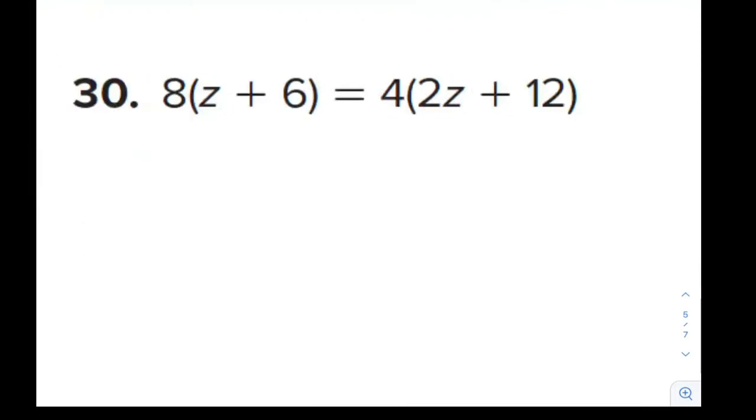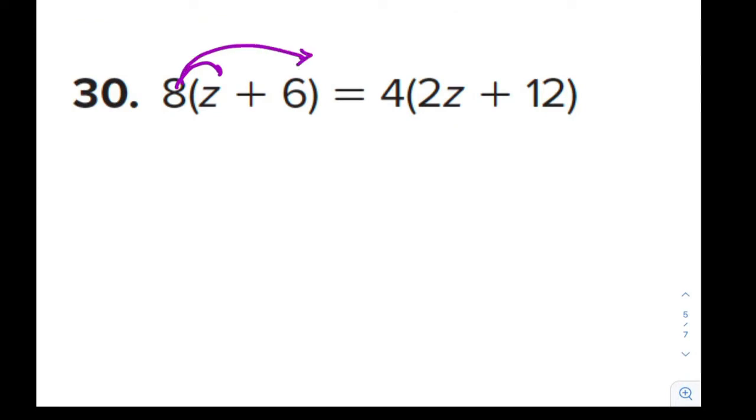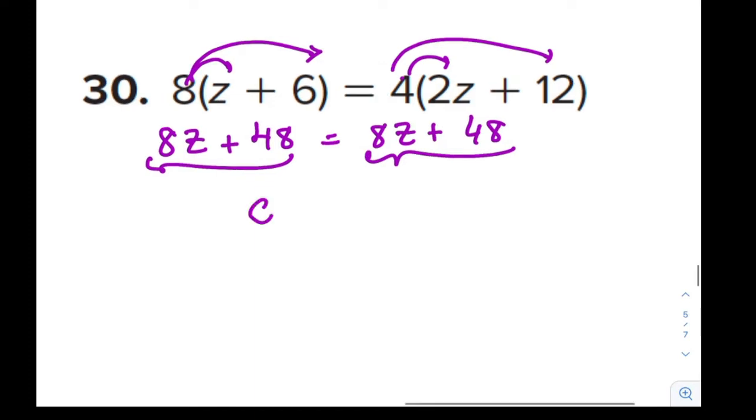Let's say we have another exercise here. We will start by distributing. 8 times z, 8z, 8 times 6, 48, equals 4 times 2z, 8z, and 4 times 12 is 48. It appears clearly here that the right-hand side is exactly equal to the left-hand side. The two sides are equal completely. So, simply and directly we can say that the left-hand side is equal to the right-hand side. And that means it is 0 equals to 0.